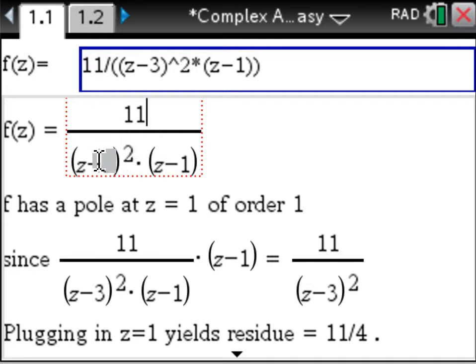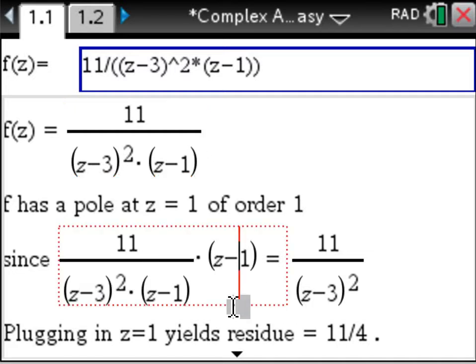So in pretty print, first of all, you have the function rewritten here in pretty format. There's a pole at z equals 1, and it's of course of order 1. And that residue is 11 over 4. Because if we multiply the original function by z minus 1, the z minus 1's cancel. And we plug in 1 for the remaining z, we end up with 11 over 4.